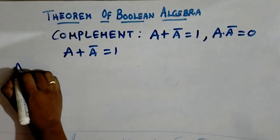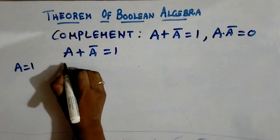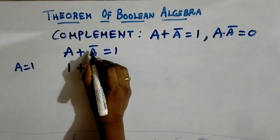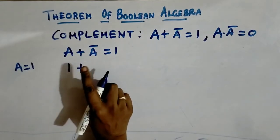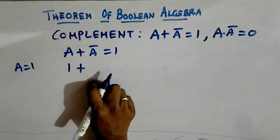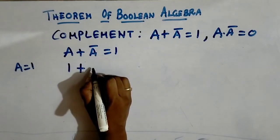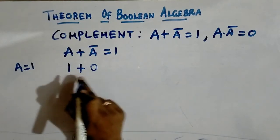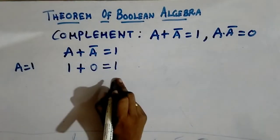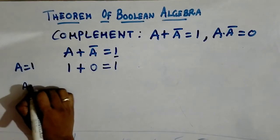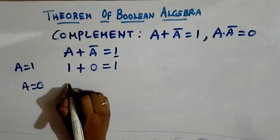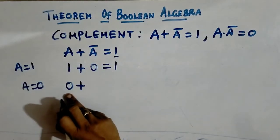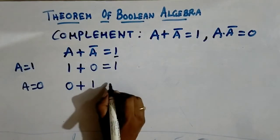First, we will discuss a plus a-bar equals 1. How do we get here? Substitute a value as 1. The complement of a — since a is 1, the complement of a will be 0. So 1 plus 0 is 1. Again, if I substitute a value as 0: 0 plus 0-bar — complement of 0 is 1 — so 0 plus 1 equals 1. In both cases we get 1, confirming a plus a-bar equals 1.